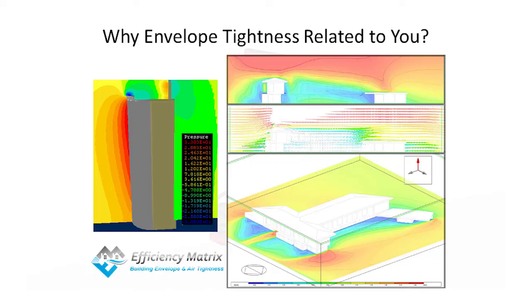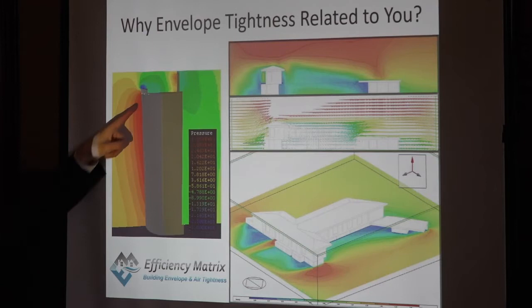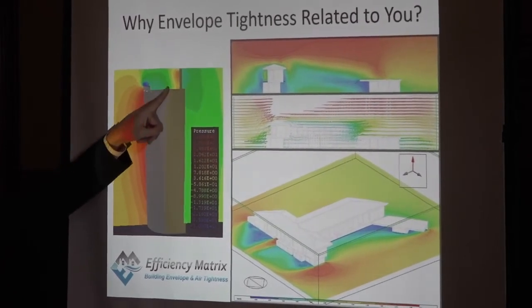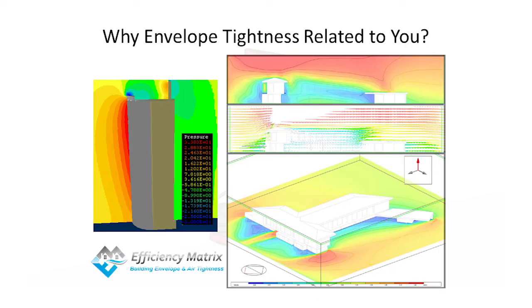These CFD diagrams show significant pressure differences between different sides, facades, and heights of the building. If you don't seal the building properly, your indoor space — especially perimeter zones — will follow the pressure outside. Imagine a very high pressure acting on the facade while your air handling unit sits on the roof where the Venturi effect creates suction. On some windy day, the fan may not be able to overcome both the suction and the pressure pushing back from inside.